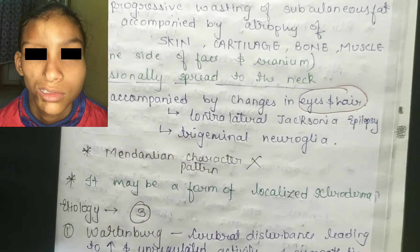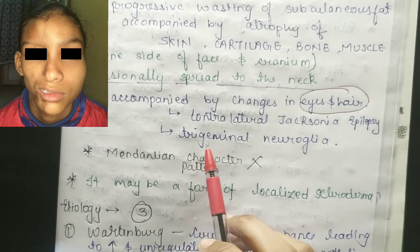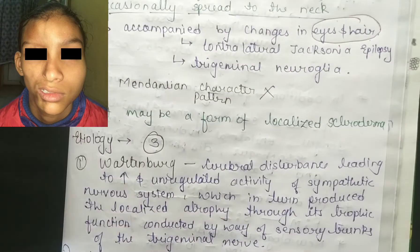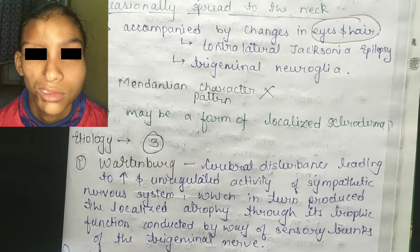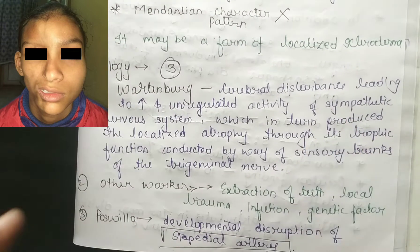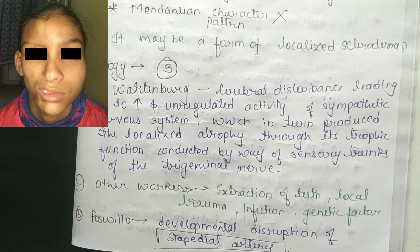It is associated with contralateral Jacksonian epilepsy and trigeminal neuralgia. It does not show a Mendelian pattern of inheritance, and it may also form a localized scleroderma.